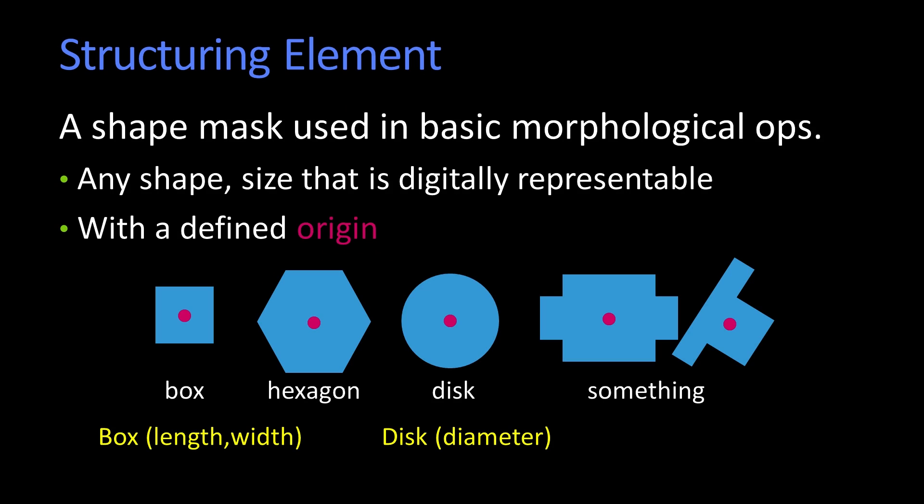The structuring element is a mask, a shape that you're going to use to do these operations. It can be any shape. For today, the shapes are going to be just ones and zeros. They can also be ones, zeros, and x's, where the x's are don't cares. But nothing we're going to talk about today will involve don't cares.